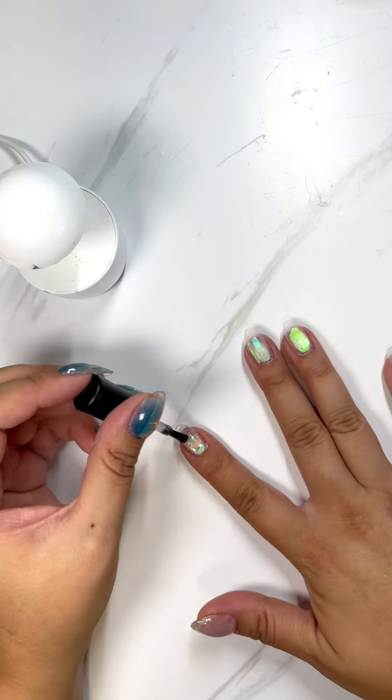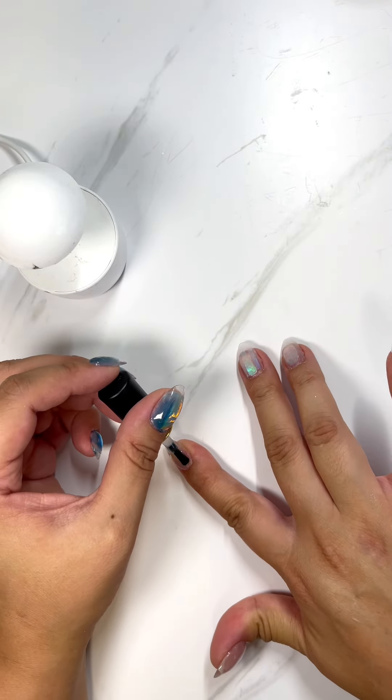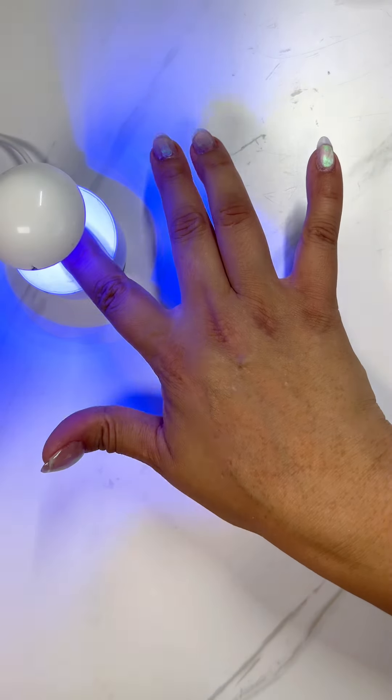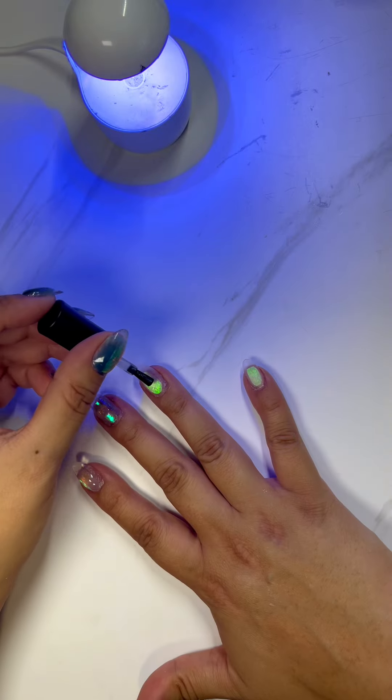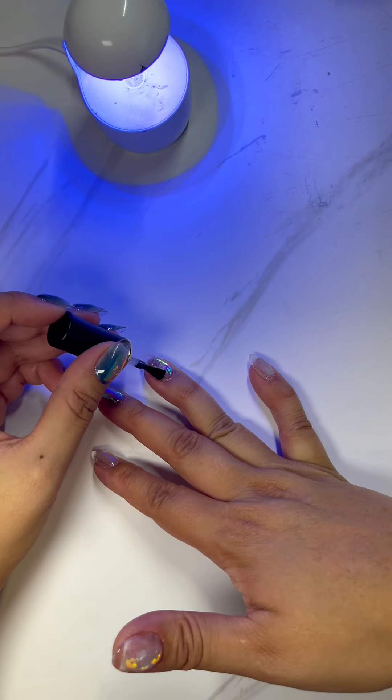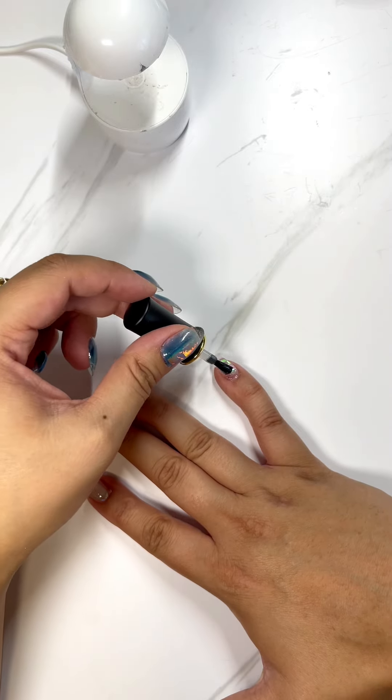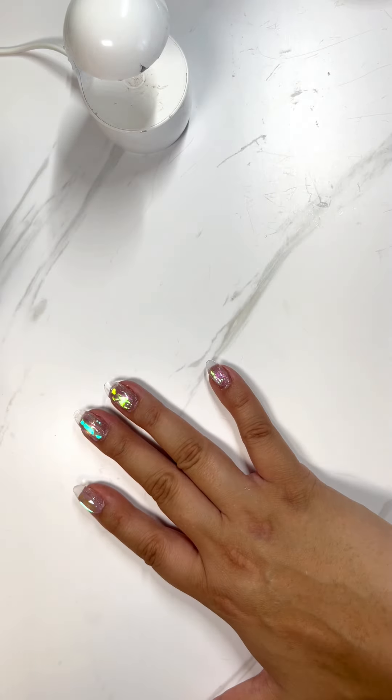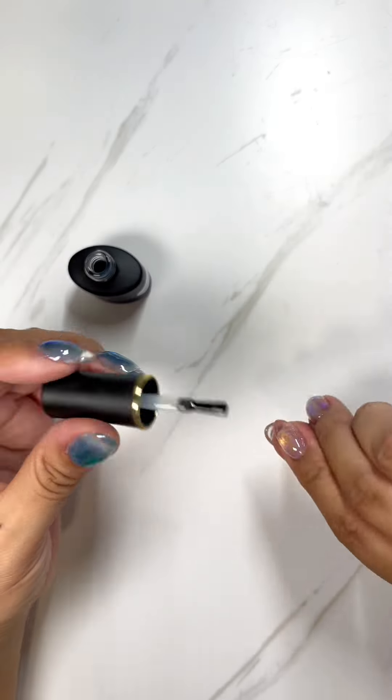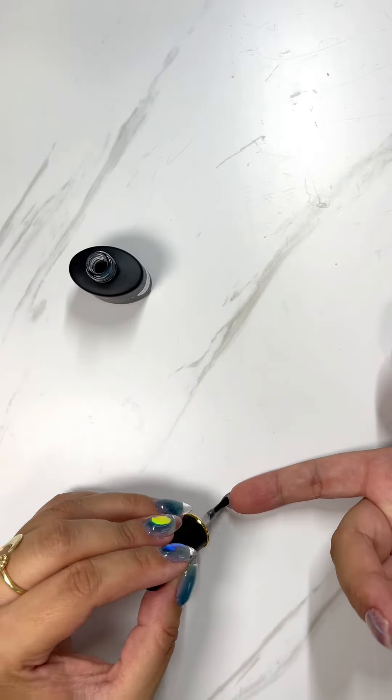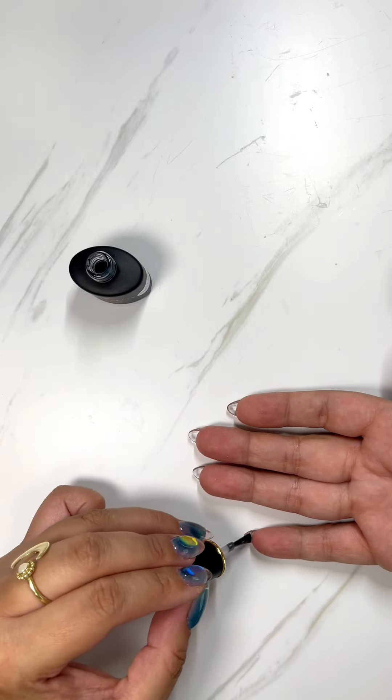I am going to flash cure it in between each nail because this particular topcoat is very thin in consistency, and if you let it sit for too long it can run down into your side walls and that can cause lifting. But I really like this topcoat because it has a nice shiny, almost wet look about it. I'm also going in under the nail tips to make sure it's all sealed off and it won't go foggy. It keeps them nice and clear and glass-like.